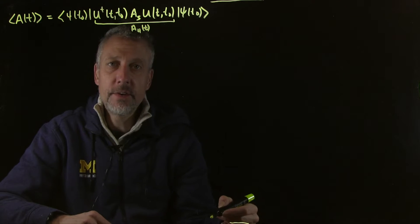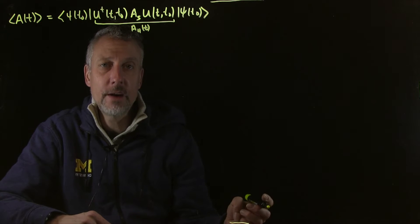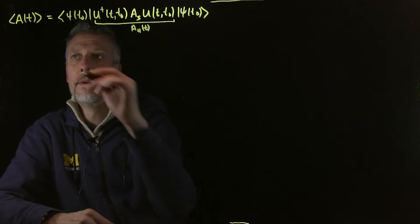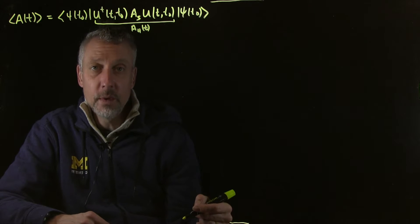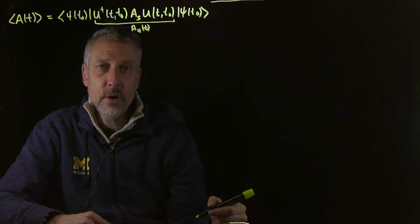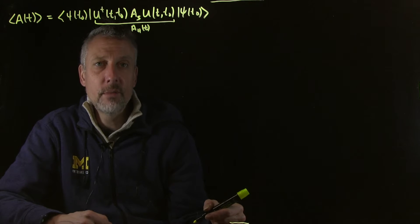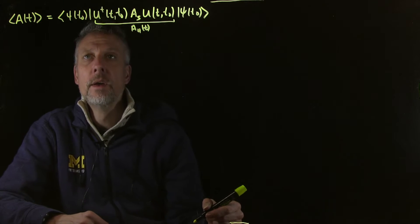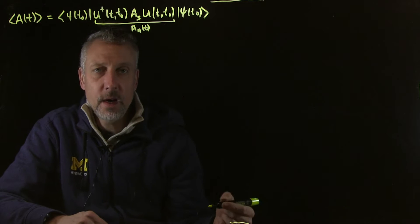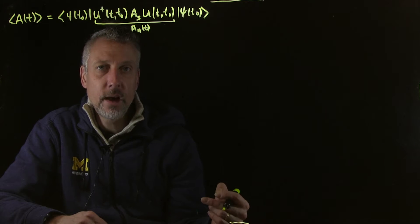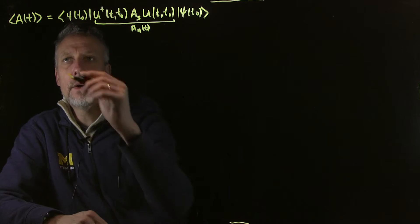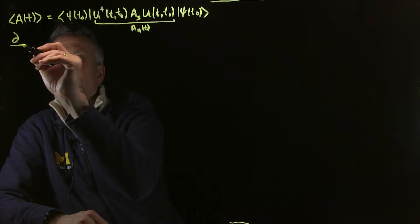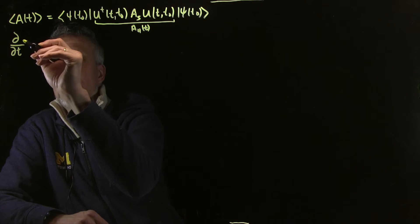So we have a sub h of t, it should have time dependence, we should have an equation of motion for that. Sometimes it's quite informative to consider a Heisenberg operator. This turns out to be incredibly important for response functions, because we'll think of the dipole moment operator as being written in the Heisenberg picture.